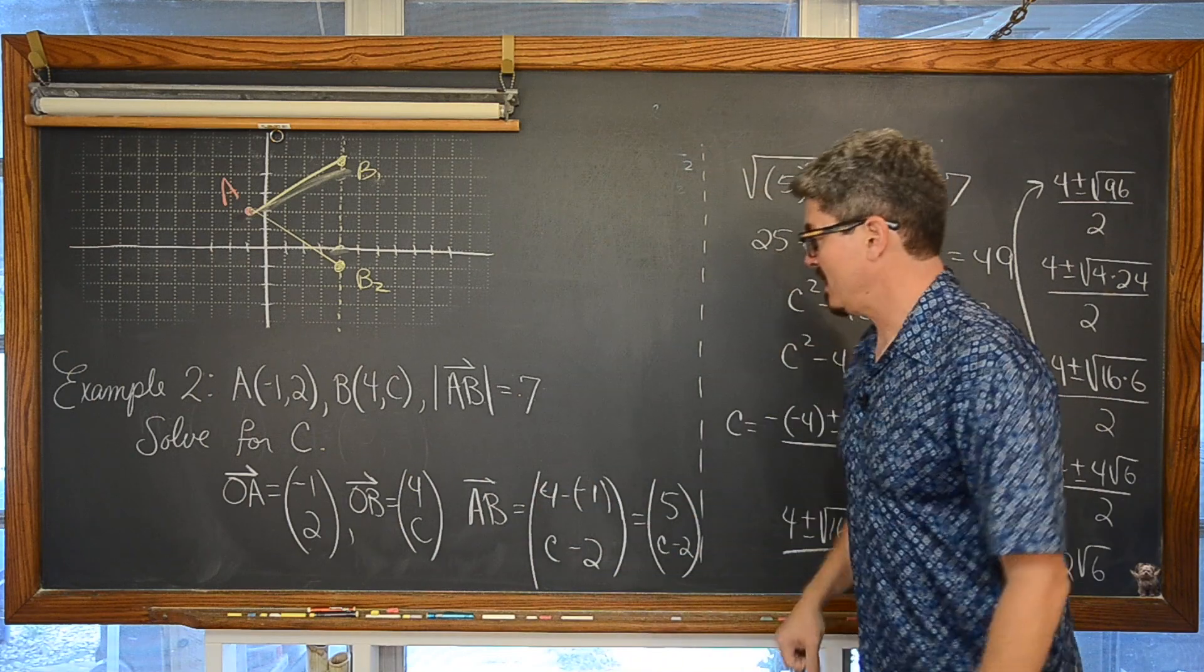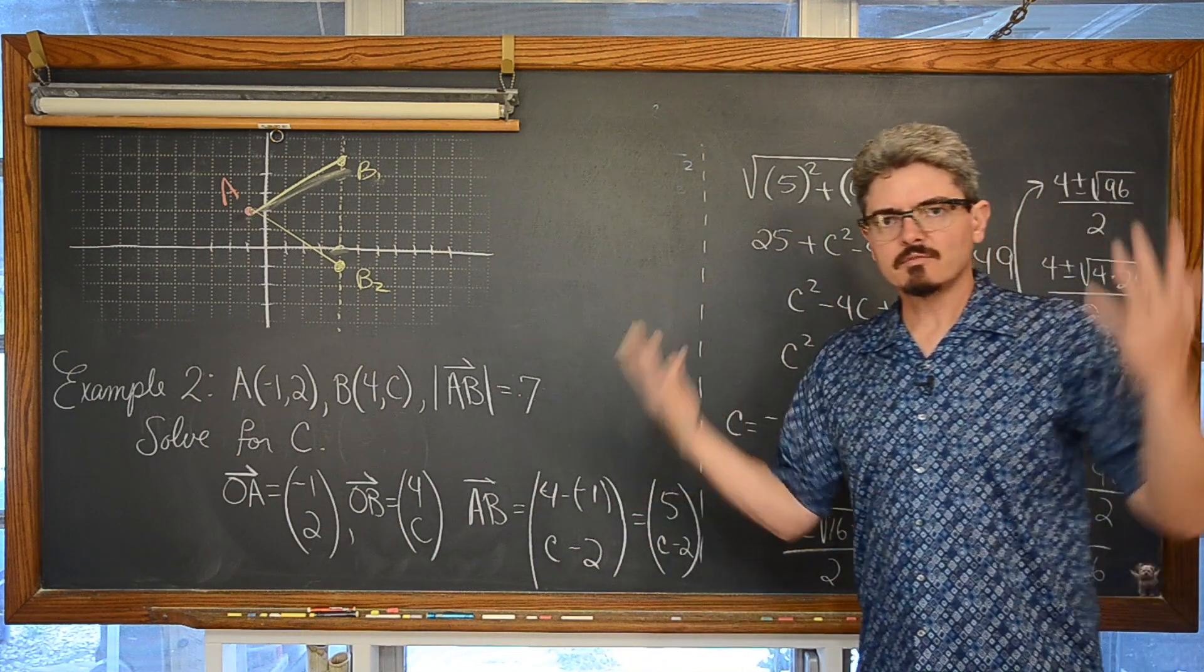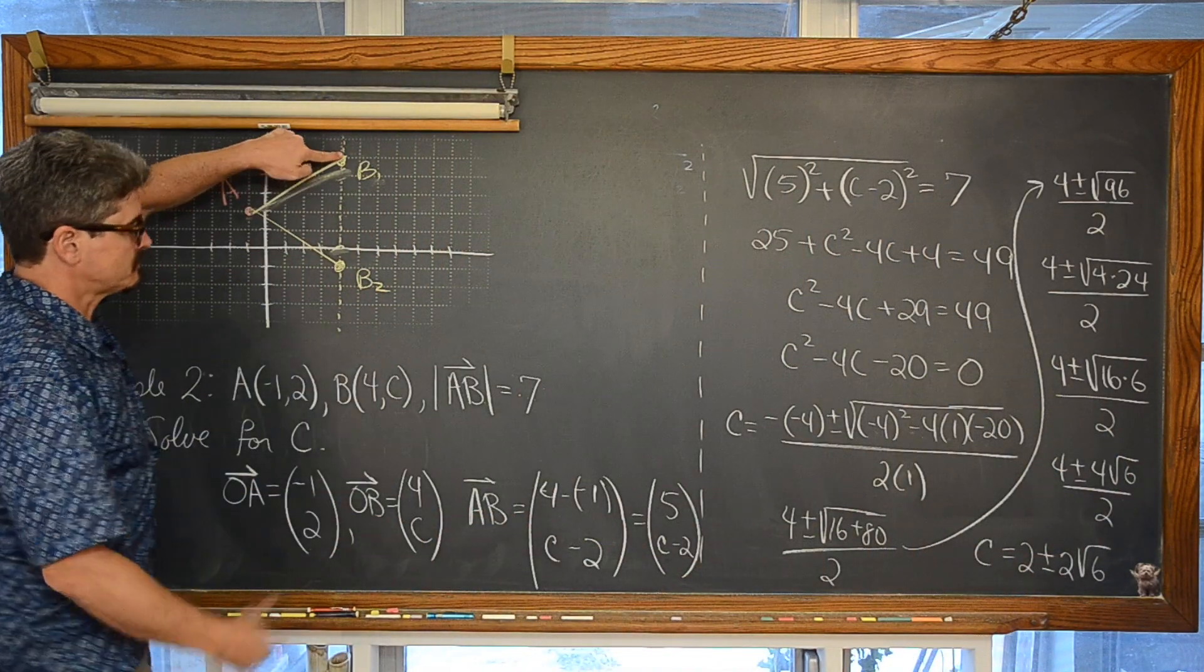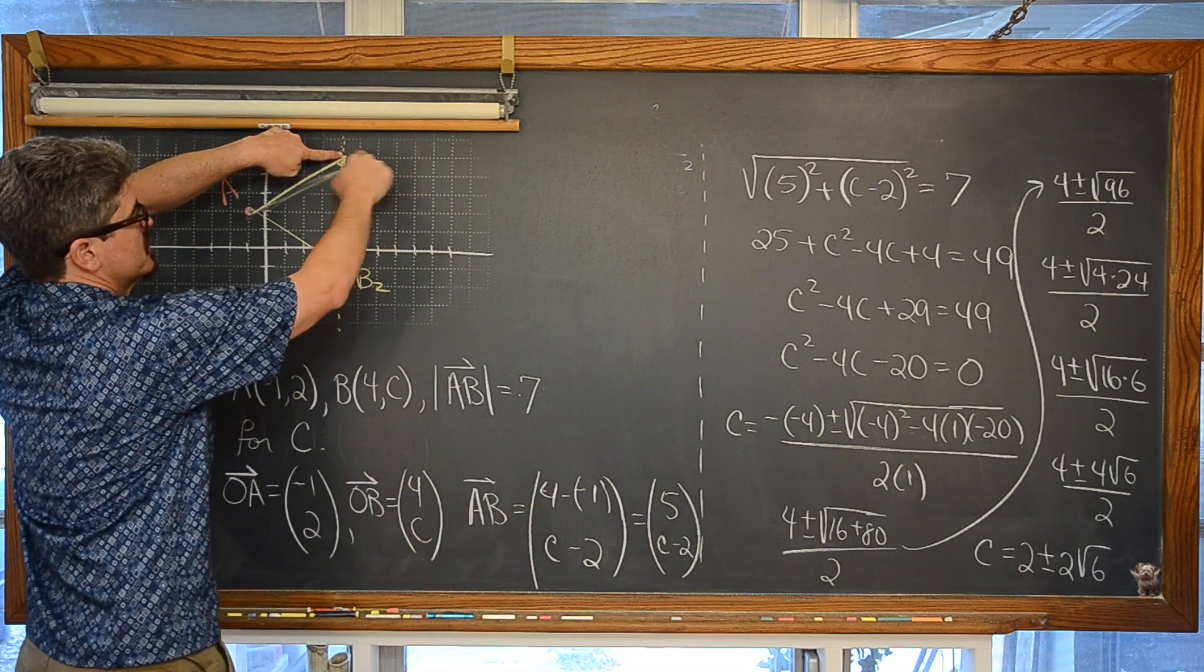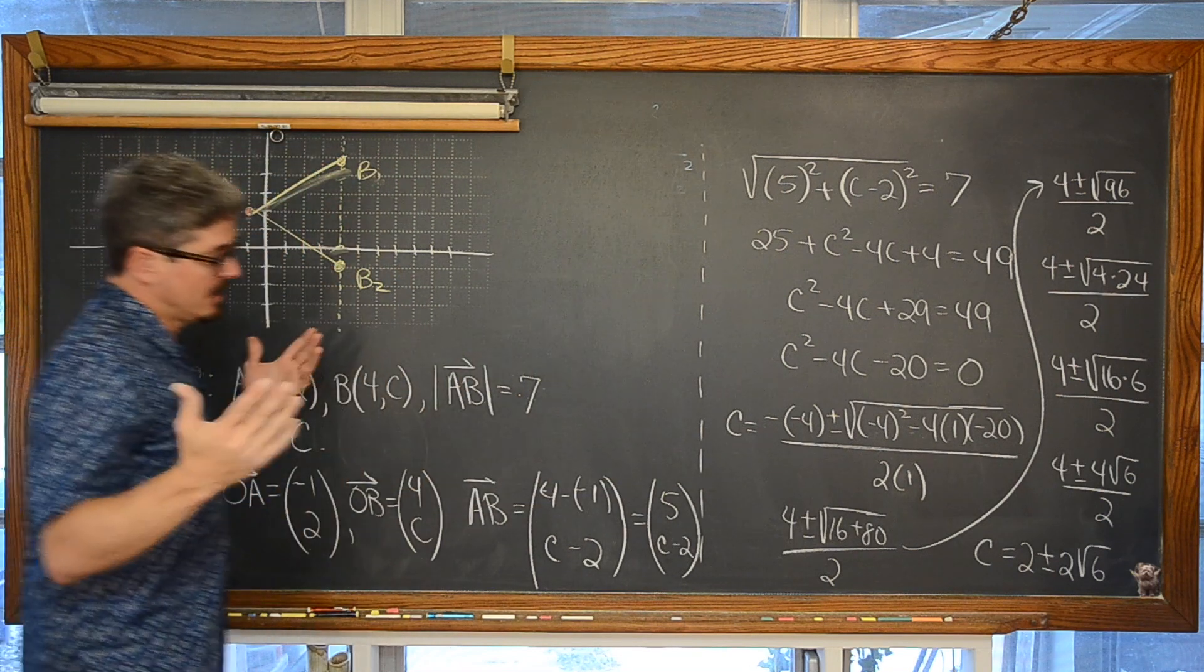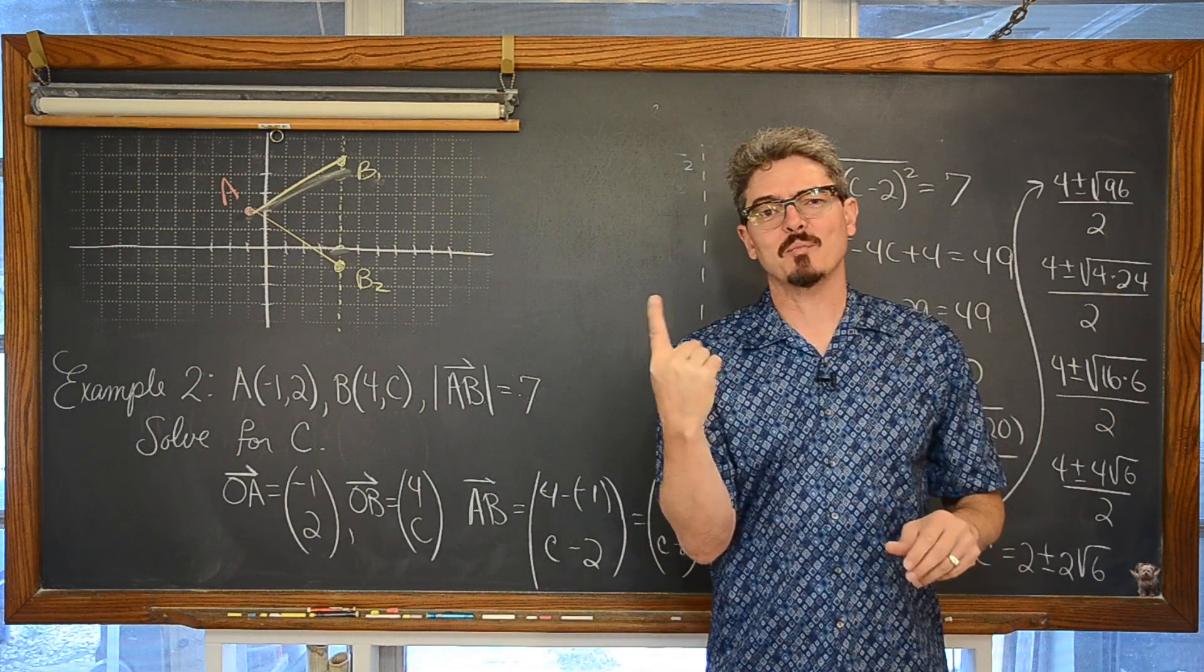So our answers are going to be, well, it was to solve for C. Not find the possible coordinates of B. But they are going to be what? They are going to be 4 and then 2 plus 2 square root of 6 or 4 and 2 minus 2 square root of 6. And that is the answer here in the finish of our second example. I have one more coming up right now.